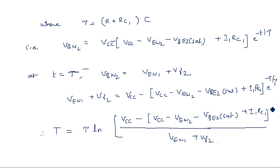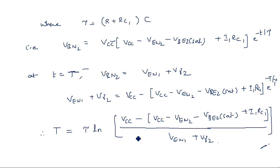This is the expression for the gate width of the monostable multivibrator in the emitter coupled configuration. In problems, you are generally given the gate width T and asked to calculate or design the remaining circuit parameters using this formula. This is the key takeaway for applying this expression.